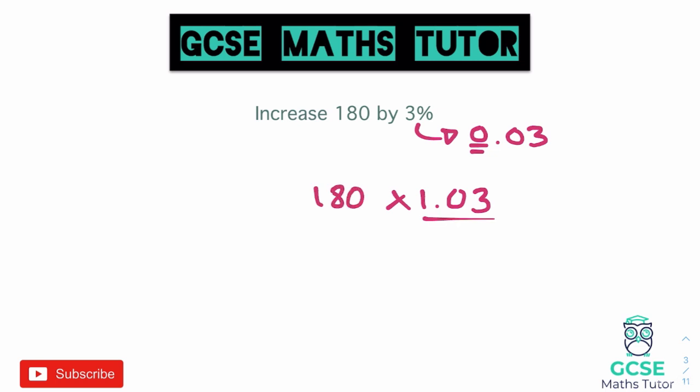Just making sure we are very, very careful with that multiplier. So typing this in: 180 multiplied by 1.03, and that gives us a final answer of 185.4. And if you did pick the wrong multiplier and instead multiplied it by 1.3, you'd get an answer of 234, which is a very, very big increase for just a small 3%. So you should be able to spot if you do make a mistake on this. Hopefully you're happy with converting 3% to a decimal as 0.03, and you're not going to accidentally make that mistake that so many people do when doing these multipliers.